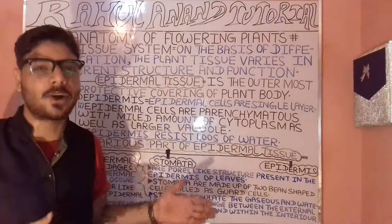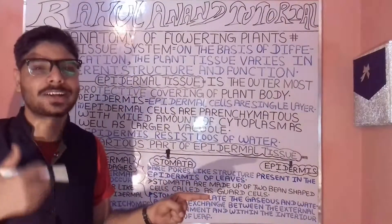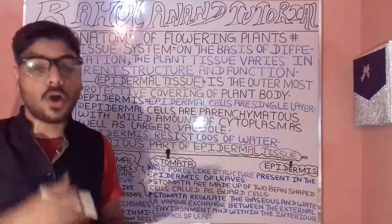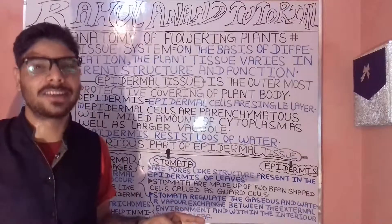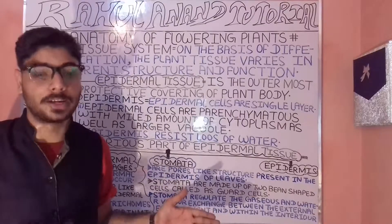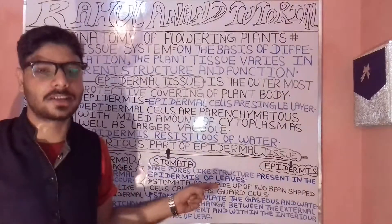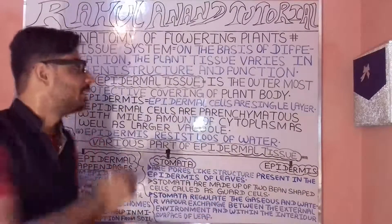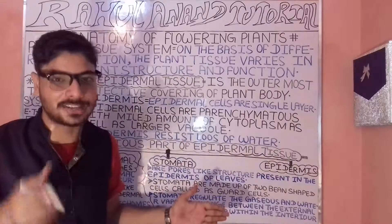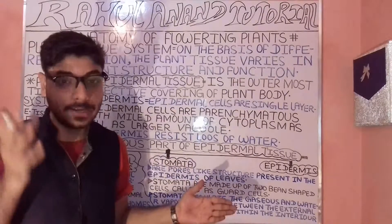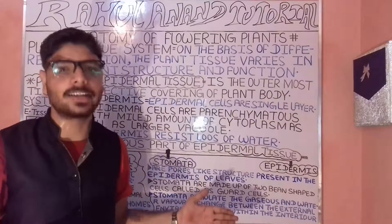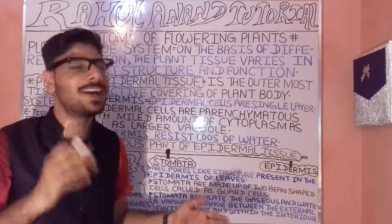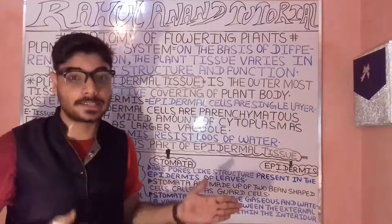We have understood about meristematic tissue, plant tissue, intercalary meristem, lateral meristem, and apical meristem. We have also covered cell organelles including cytoplasm and vacuoles. If you like the education, lectures, and videos, please subscribe, like, share, and comment below so I know what concepts you want to learn. Thank you, and please like, subscribe, and share the lectures.